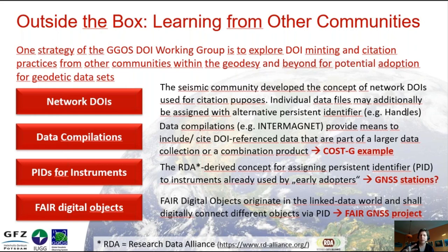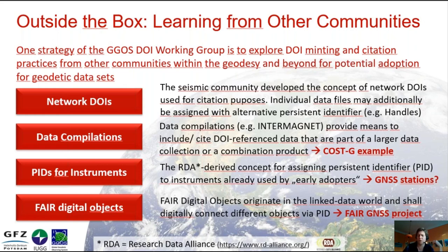You can identify the relations between each product via the DOI metadata. An example of this, which I will show later, is the COST-G, where we have already made a practical example. We also have newly developed ideas like using persistent identifiers for instruments or FAIR digital objects, which are used in some parts of our group and in other projects.